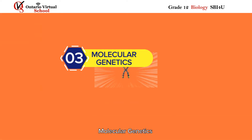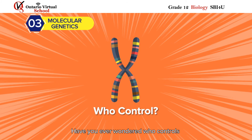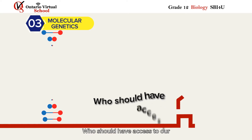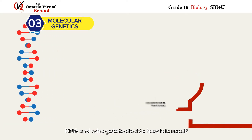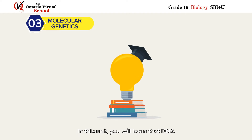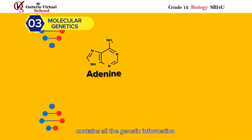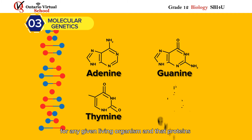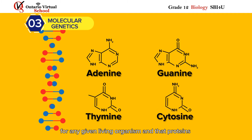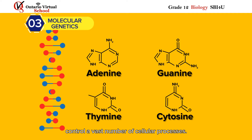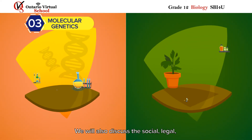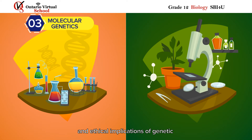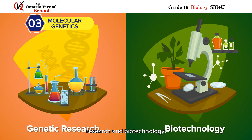Molecular Genetics. Have you ever wondered who controls your personal genetic information? Who should have access to our DNA and who gets to decide how it is used? In this unit, you will learn that DNA contains all the genetic information for any given living organism and that proteins control a vast number of cellular processes. We will also discuss the social, legal, and ethical implications of genetic research and biotechnology.